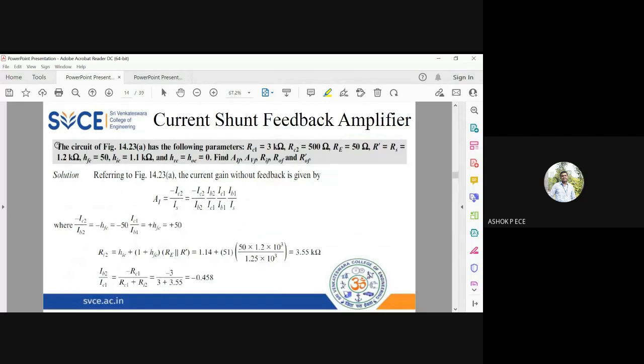The same example is given as a problem. RC1 is 3k, RC2 is 500 ohm, RE is 50 ohm, R' equals RS equals 1.2k, hfb is 50, hi is 1.1k, and all other parameters are assumed to be zero. They're asking us to find the parameters of the amplifier.